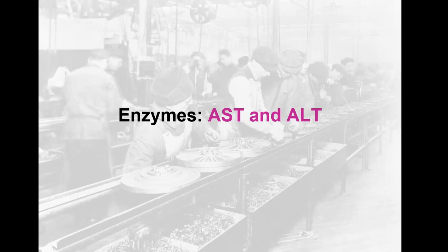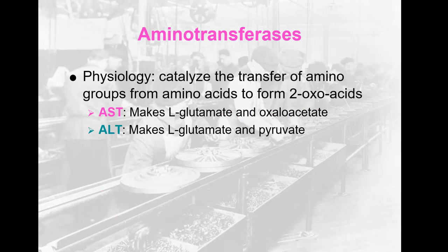Hello, this is another clinical chemistry review video on enzymes AST and ALT. Let's first talk about the aminotransferases. Physiologically, they catalyze the transfer of amino groups from amino acids to form two oxo acids. AST makes L-glutamate and oxaloacetate, and ALT makes L-glutamate and pyruvate. So they are able to modify amino acids — they are aminotransferases.